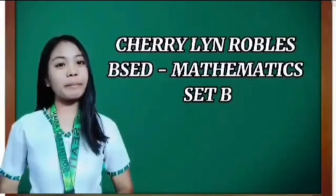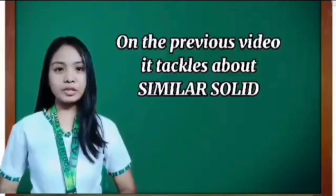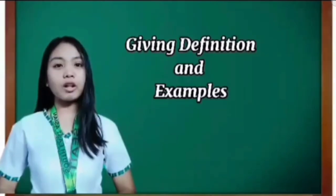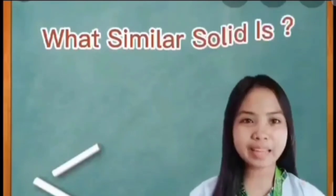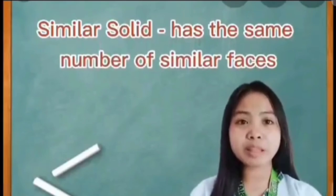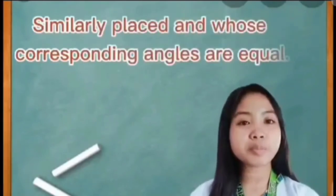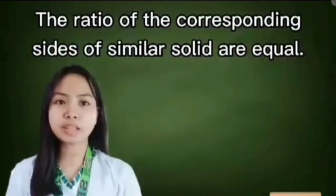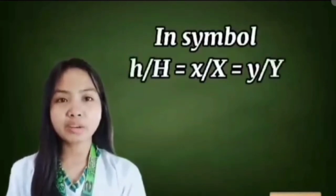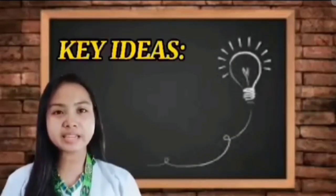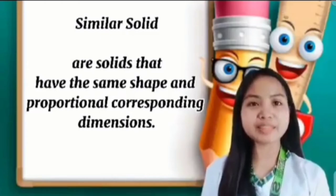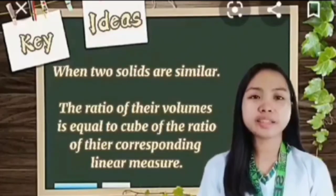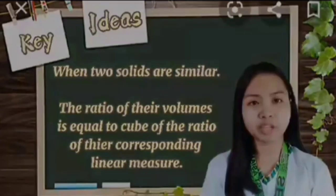Good day everyone! I am Charline Robles from BS Ed Mathematics, Set B. On the previous videos, it talked about similar solids, the definition, and their examples. To summarize: similar solids have the same number of similar faces, similarly placed, and whose corresponding angles are equal. The ratios of corresponding sides of similar solids are equal — in symbols: H/H, X/X, and Y/Y. Key ideas: a similar solid has the same shape and proportional corresponding dimensions. When two solids are similar, the ratio of their volumes is equal to the cube of the ratio of their corresponding measures.